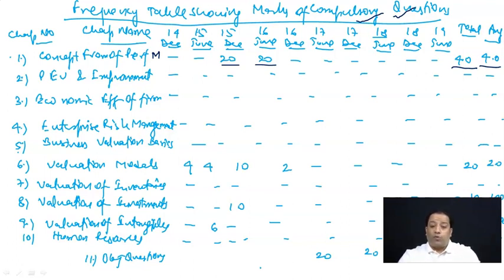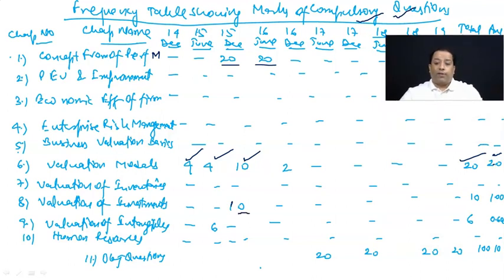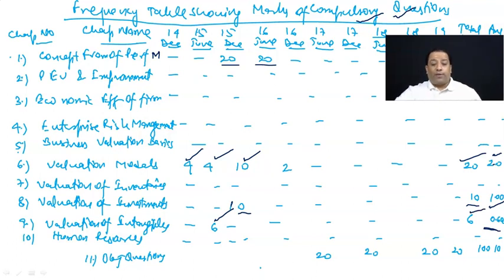Business valuation basics में से भी अभी तक खास कुछ नहीं आया। Valuation models: 14th December 4 marks, 15th June 4 marks, 15th December 10 marks, 16th June 2 marks — total 20 marks, average 2 marks compulsory। Valuation of inventory से compulsory कुछ नहीं। Valuation of investment में only 15th June attempt में 10 marks का compulsory question — average 1 mark। Valuation of intangibles में 15th June में 6 marks — average 0.60 marks। Human resources से compulsory कुछ नहीं।